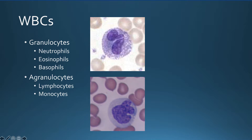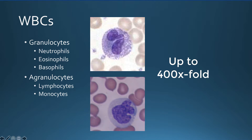In our laboratory, we have commercially prepared human blood smears used to identify the different blood elements. For microlab at home, you do not have access to those slides, so we will make do with pictures. Because these are eukaryotic cells, they are relatively large compared to bacteria, and we use up to 400-fold magnification to observe these slides.